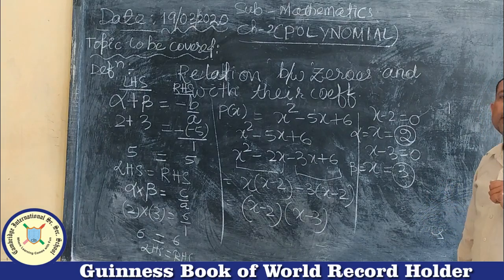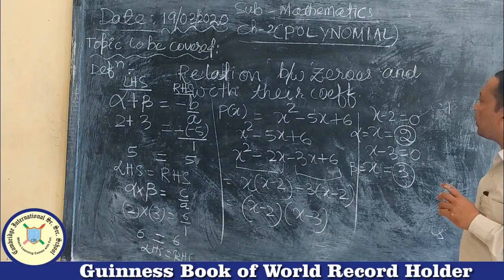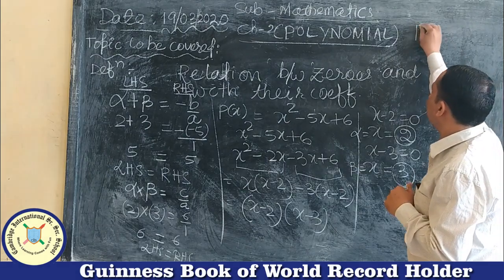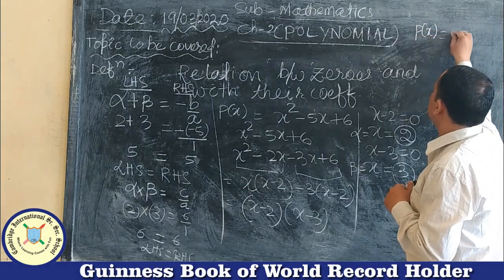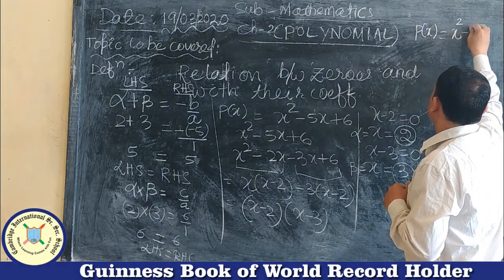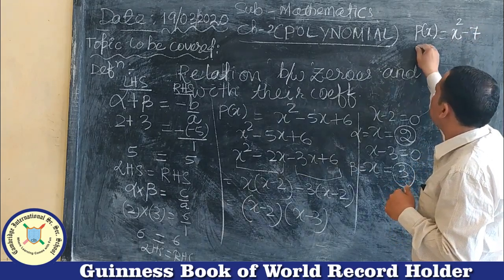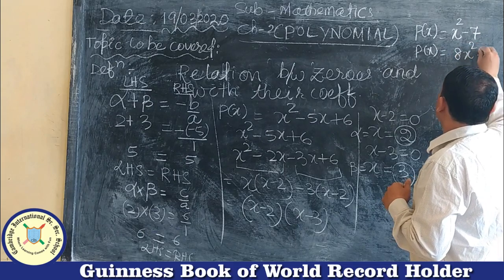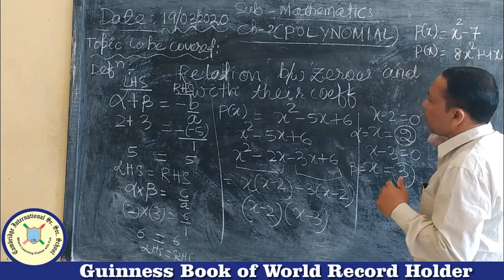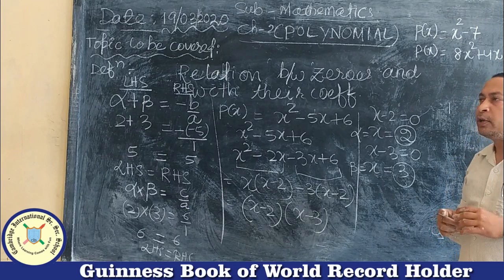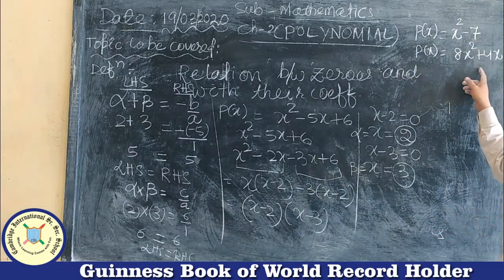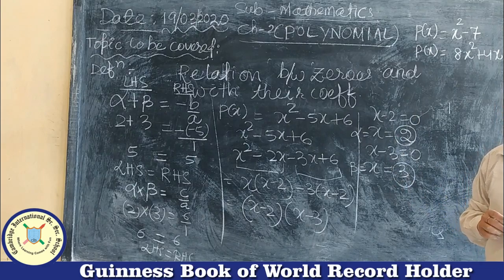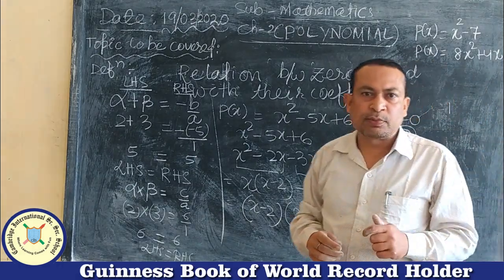There are many more examples of quadratic polynomials. For example, P(x) = x² − 7, and another example P(x) = 8x² + 4x. Try to find the zeros of these polynomials and verify the zeros with the coefficients using the same process. Thank you.